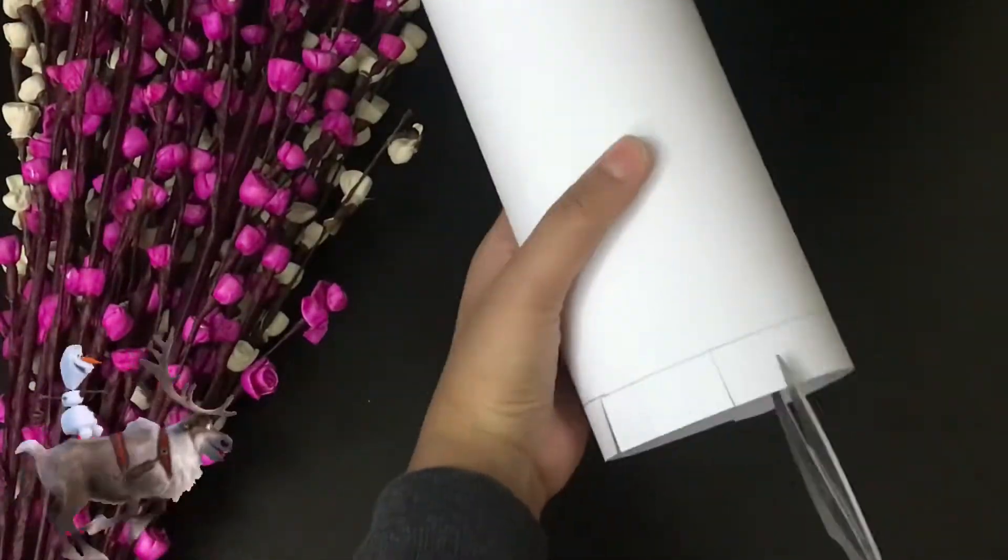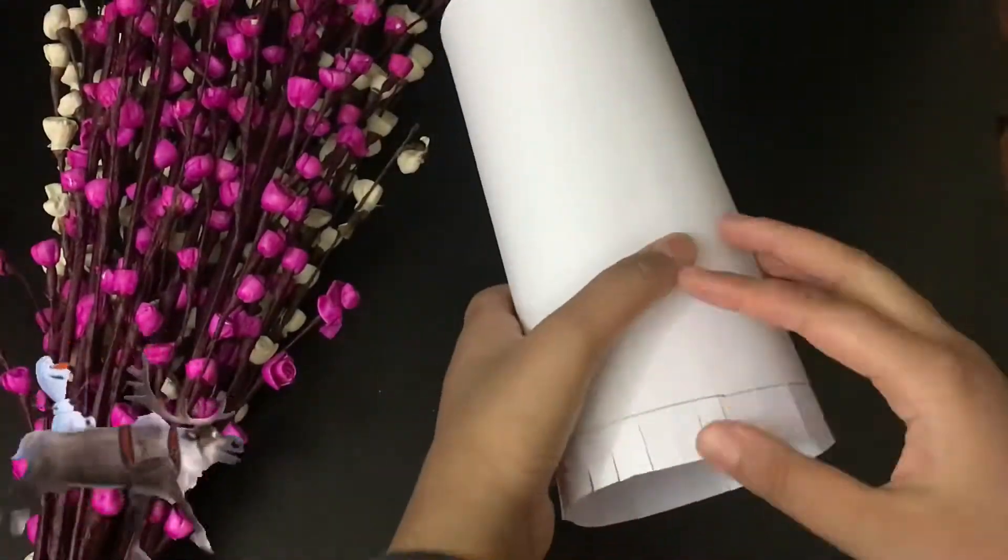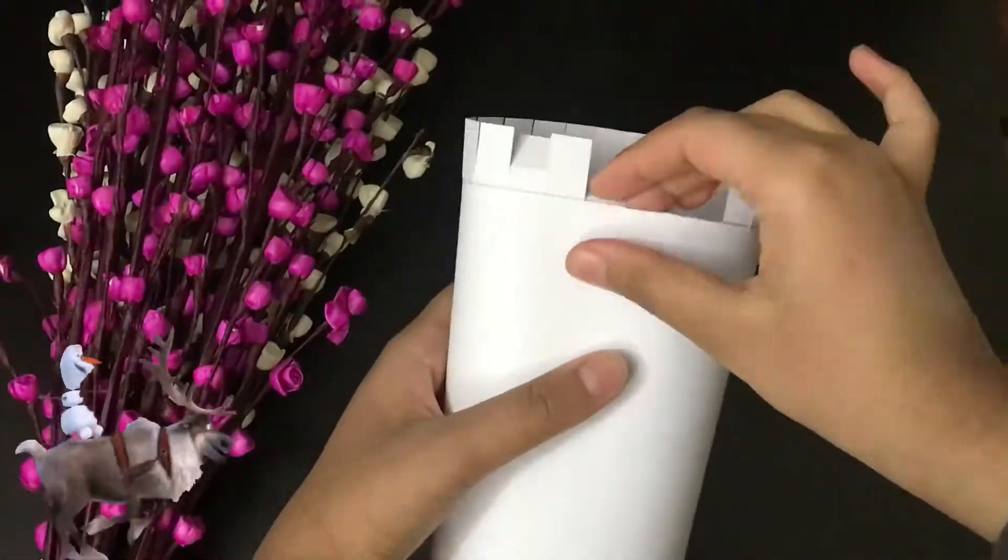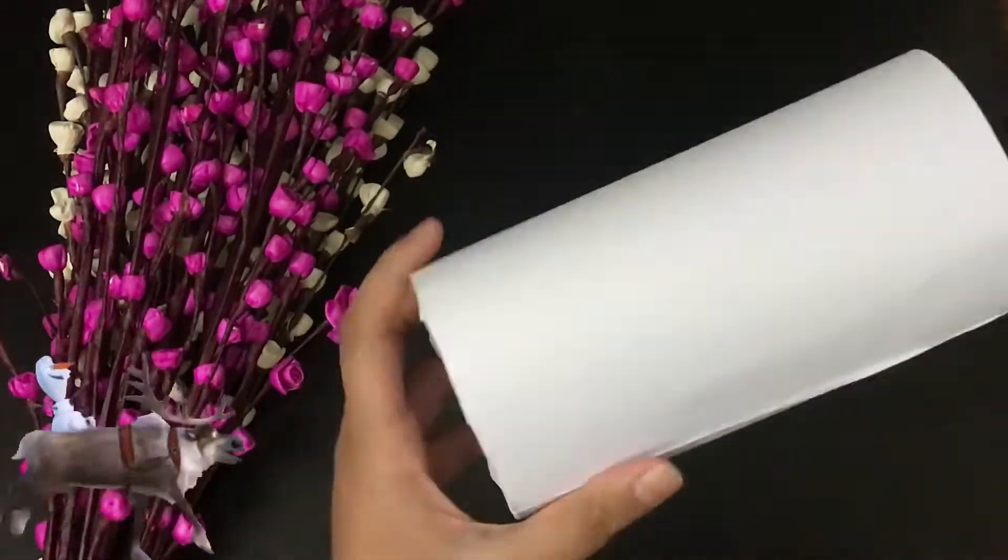Next, make many cuts below the line as you can see in the video. Make the cuts all over the roll and start folding like this. This is how it will look.